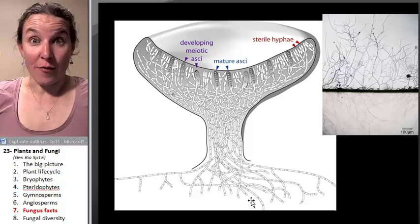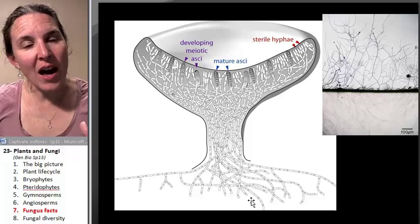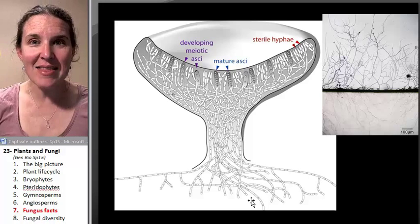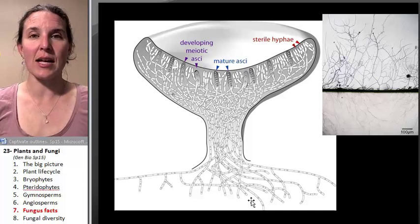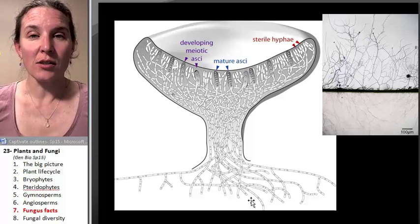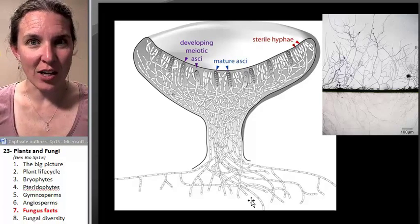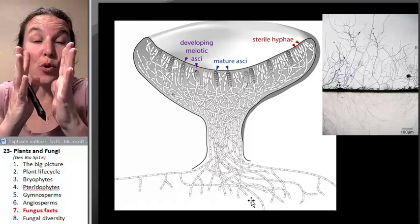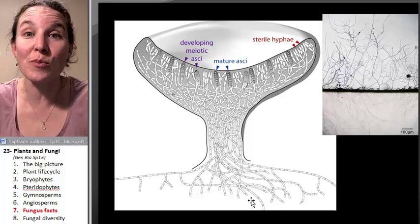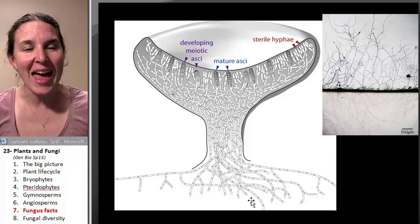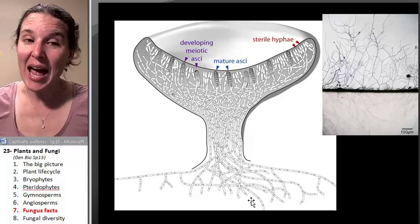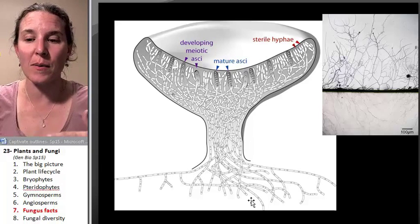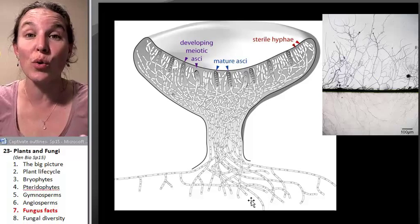Often you disturb the hyphae, you disturb the mycelium in the ground, and then the critter says, oh geez, looks like there's some kind of disaster coming. Let's make babies. And so it will push up its little fruiting bodies, which are the mushrooms that you are familiar with, and the mushrooms are what you eat, and the mushrooms are what produce the spores or the ability to make new fungi.